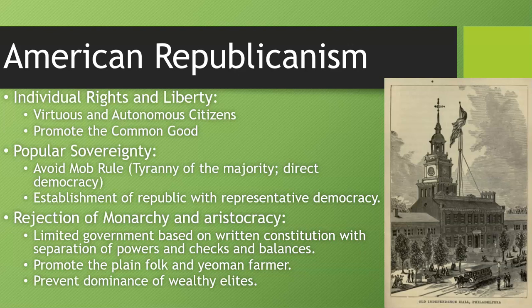Popular sovereignty is the next ingredient — and this is a big one. This is to avoid mob rule; there's no tyranny of the majority here, no direct democracy. We establish a republic with a representative democracy, which means we pick somebody freely and they govern for us. It's an attempt to avoid both types of tyranny: tyranny of a really strong government and tyranny of a majority — the 51 always telling the 49 what to do. There is also an inherent rejection of monarchy and aristocracy — no lords, dukes, or duchesses in the United States.